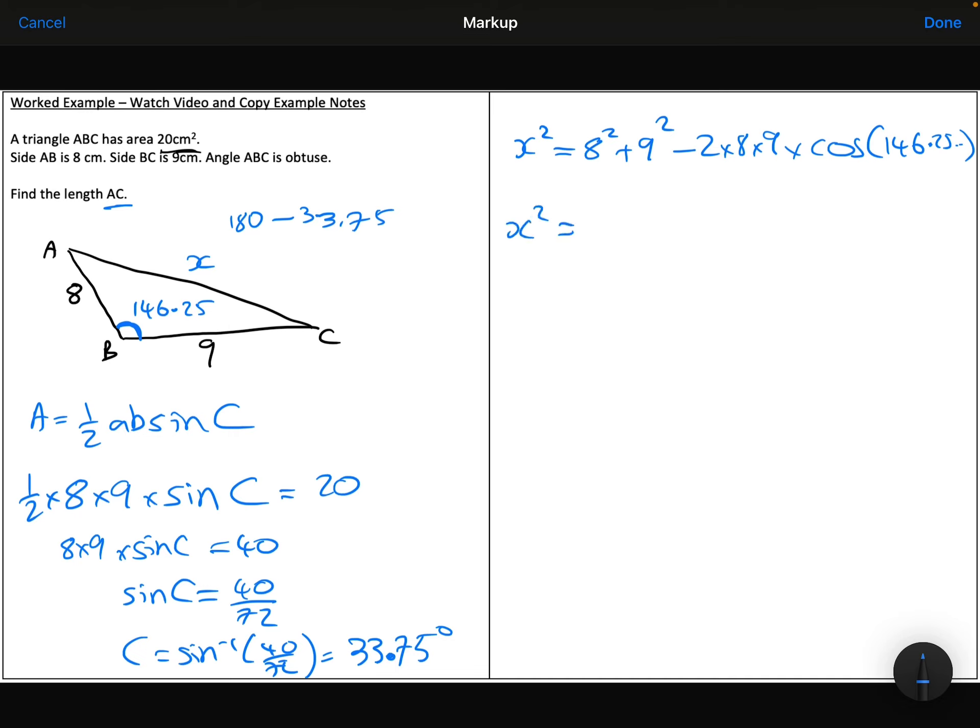So if I type that into my calculator, 8 squared plus 9 squared minus 2 times 8 times 9 times cosine of my answer from the previous part of the question, I get 264.73.